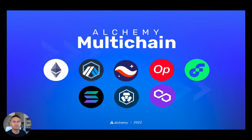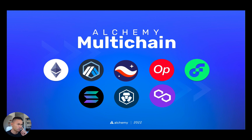Finally, Alchemy isn't just building these features for Ethereum. As of last year, we've rebuilt our entire infrastructure from the ground up to support any chain — L1 or L2 — across the entire Web3 ecosystem. Today we support eight different chains, including Ethereum, Polygon, Arbitrum, Optimism, StarkNet, and we just recently started supporting Solana. There's way more coming, so keep an eye out.